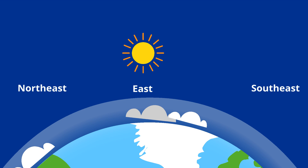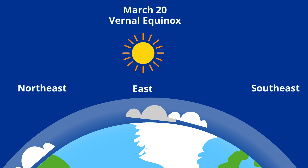Actually, the sun rises in the east and sets in the west only two times a year in each hemisphere. In the northern hemisphere on March 20th, which is the first day of spring, also called the vernal equinox, the sun rises due east.